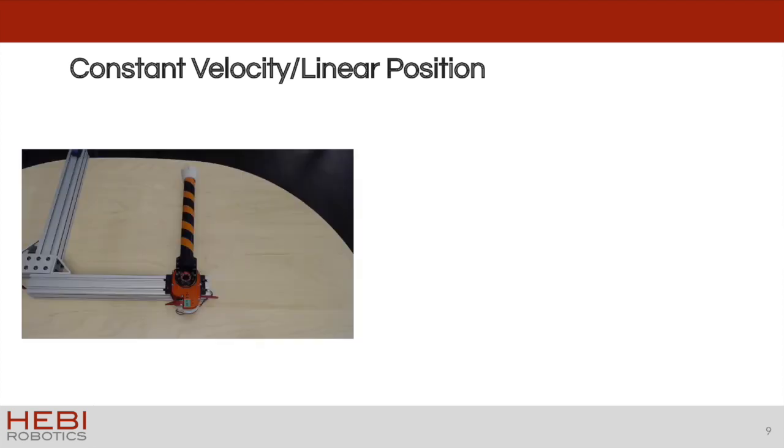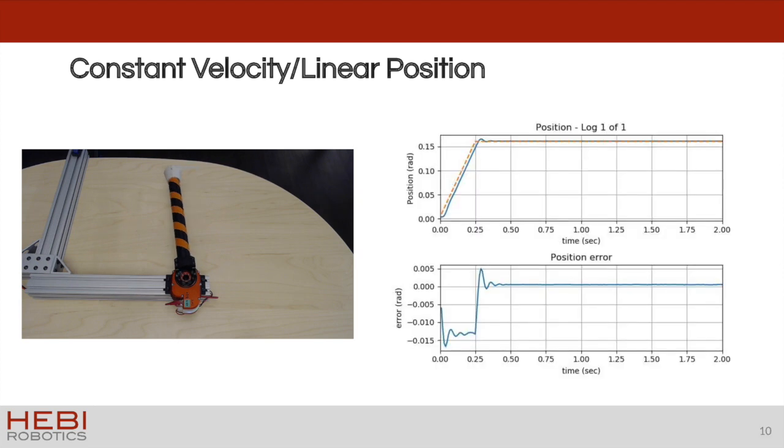So running this on a physical system, and again plotting the log data, this is definitely an improvement. Now for many systems, this may be enough of an improvement and is still very easy to implement. The motion during the constant velocity portion of the trajectory is much smoother, although there is still some oscillation at the beginning and end of the motion. Let's look at this in more detail.